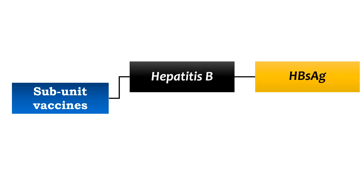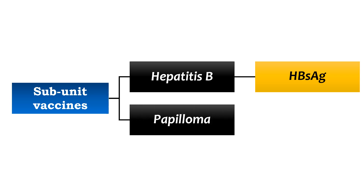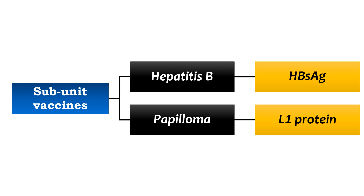The most commonly encountered subunit vaccines are given for Hepatitis B and papillomavirus. The Hepatitis B vaccine is prepared from Baker's yeast by recombinant DNA technology, where the S gene of hepatitis B virus is cloned into the yeast chromosome. For HPV, vaccines consisting of virus-like particles composed of the L1 protein are produced in yeast by recombinant DNA technology. The 9-valent Gardasil vaccine and bivalent Cervarix vaccine are commercially available.